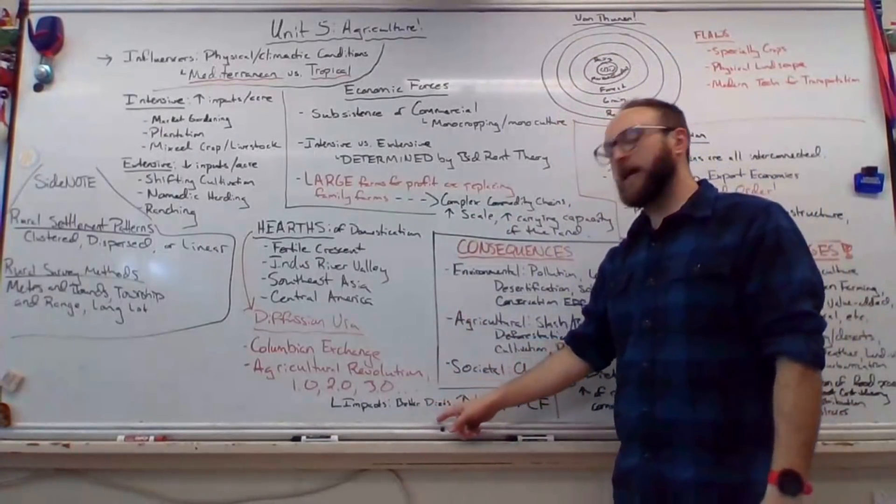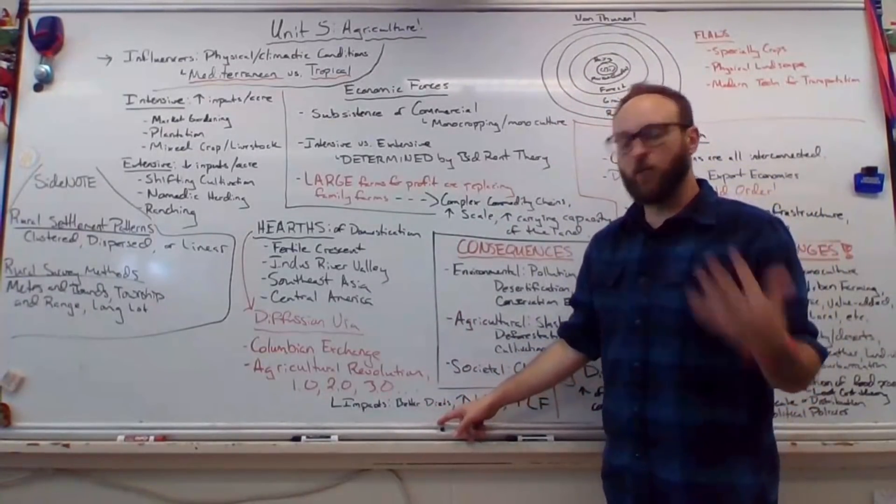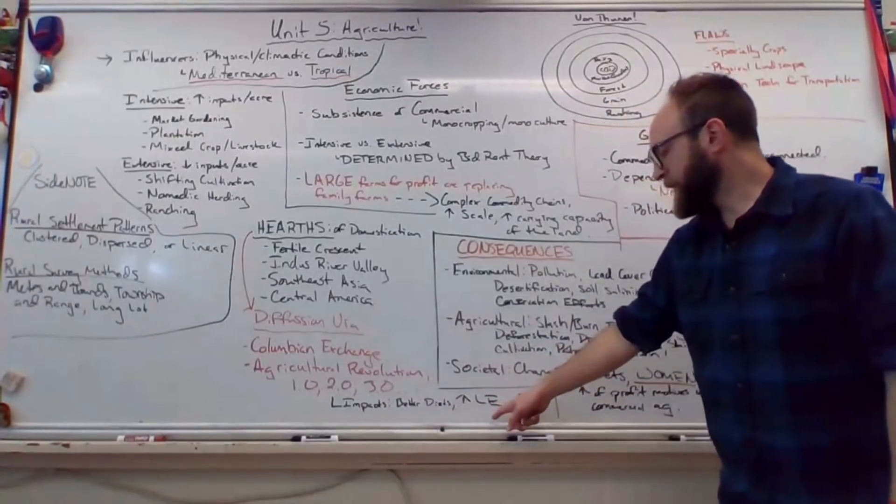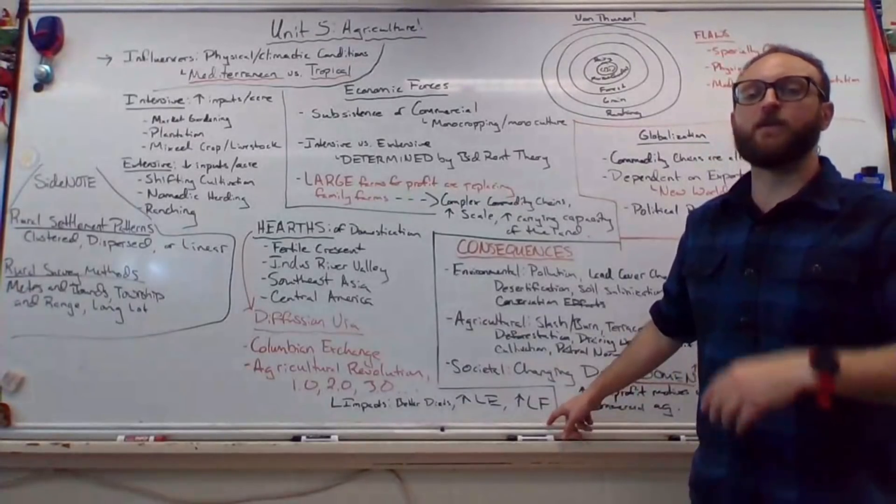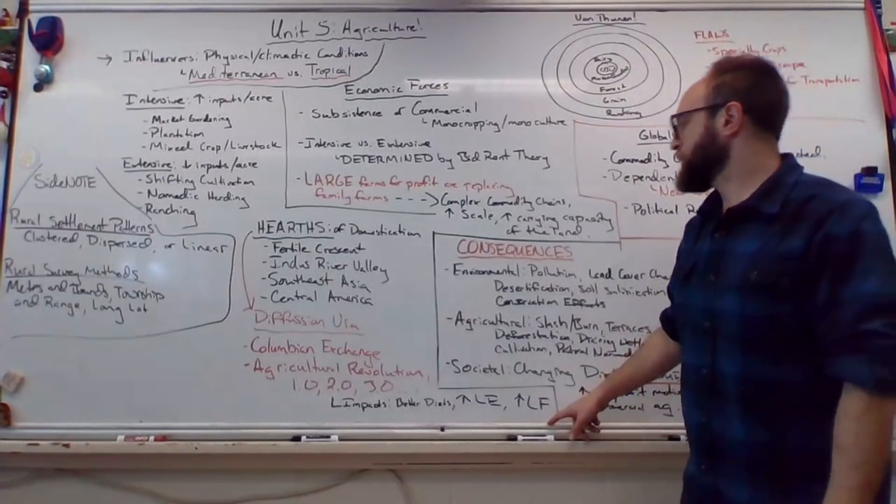Impacts would be better diets. We're eating more diverse, larger volumes, more nutritious meals, longer life expectancy. That's an E. I know my handwriting is a bit freakish. And then an increased size of the labor force, meaning we have more people who are capable of working, which is pretty cool.